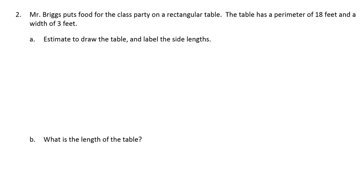Mr. Briggs puts food for the class party on a rectangular table. The table has a perimeter of 18 feet and a width of 3 feet. Estimate to draw the table and label the side lengths. Okay so here's the table. I'm not going to try and draw a table that's 18 feet long on a piece of paper because I can't do it. It says estimate to draw the table. We'll just try to make it. The perimeter is 18. The width is 3 feet, or if you want to abbreviate it, there's a couple different ways to abbreviate feet. This is one of them, FT.